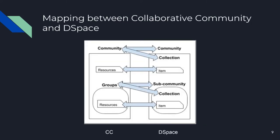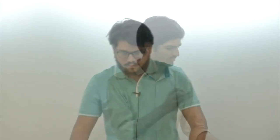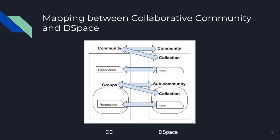Now we know the three main components of our project: collaborative community, DSpace, and the Next app we created to map collaborative communities to DSpace. As you can see in the diagram, for the creation of a community in collaborative communities, we need to create a community and collection in DSpace. Similarly with resources — if a resource is created in the collaborative community, a corresponding item needs to be created in DSpace. The same goes for groups and resources within a particular community.